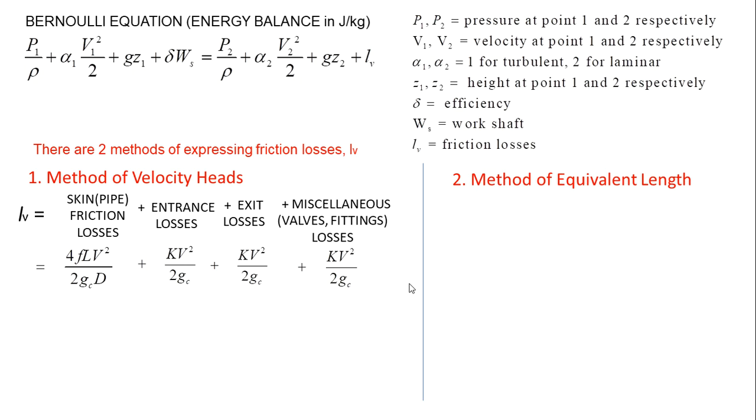Velocity head K for entrance losses is equal to 0.5. K for exit losses is equal to 1. And K for miscellaneous losses can be found in Perry's handbook or other reference materials.